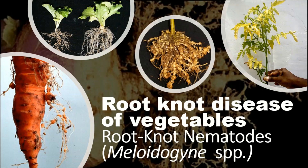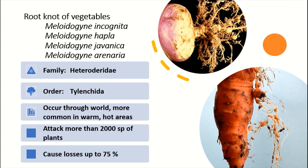There are several species present in this genus — more than 100 species. But Meloidogyne incognita, Meloidogyne hapla, Meloidogyne javanica, and Meloidogyne arenaria are very important species which cause root-knot disease in different vegetable crops. These nematodes belong to the family Heteroderidae and order Tylenchida, and occur throughout the world, mostly in warmer areas of the globe.